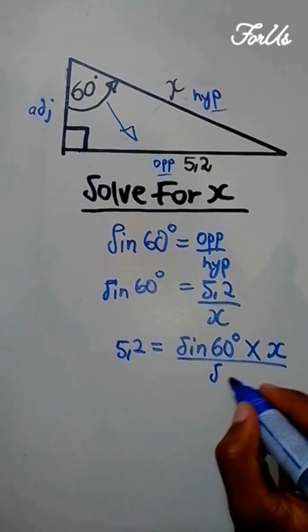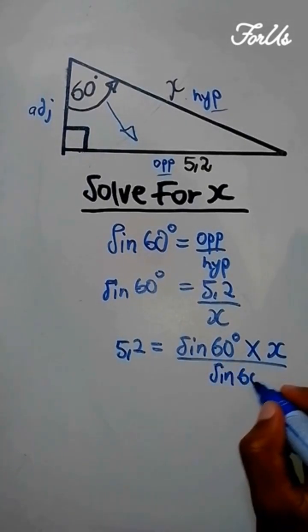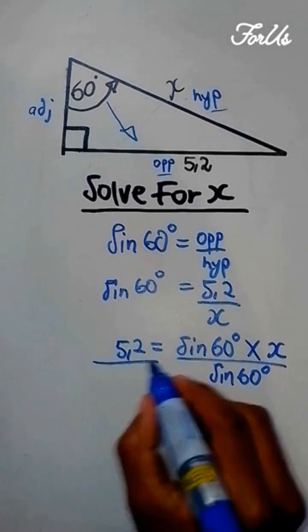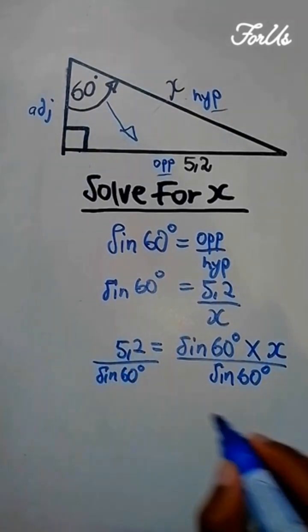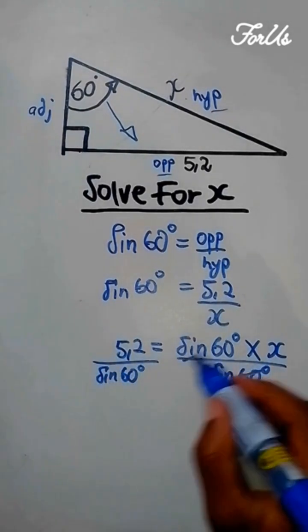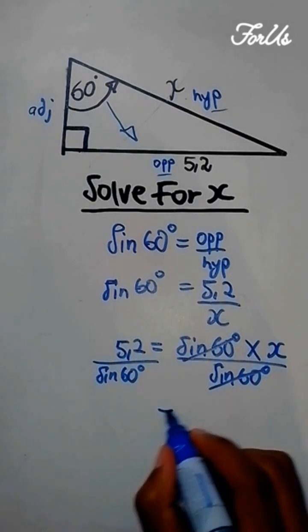Next you divide both sides by sine 60 degrees. Here it's going to be sine 60 degrees, this one will cancel, this one will remain with x.